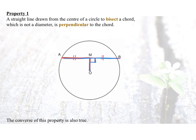Converse of the property is also true. If we have a right angle, then ON will bisect AB.